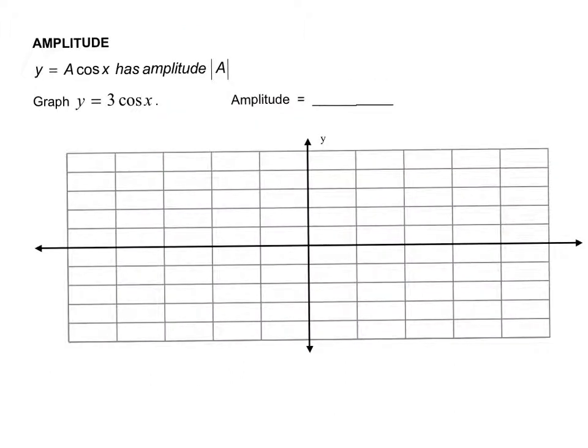Our next transformation is amplitude. And so if I have a coefficient in front of my parent function, in this case of cosine, my amplitude is the absolute value of A. Remember, that negative sign tells me it's a reflection. So if I'm graphing y equals 3 cosine x, my amplitude is 3, and that comes from this right here.